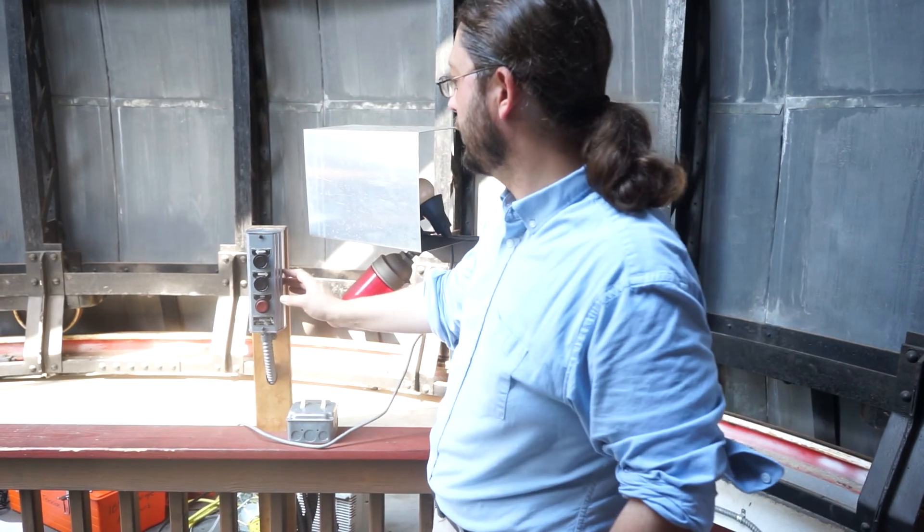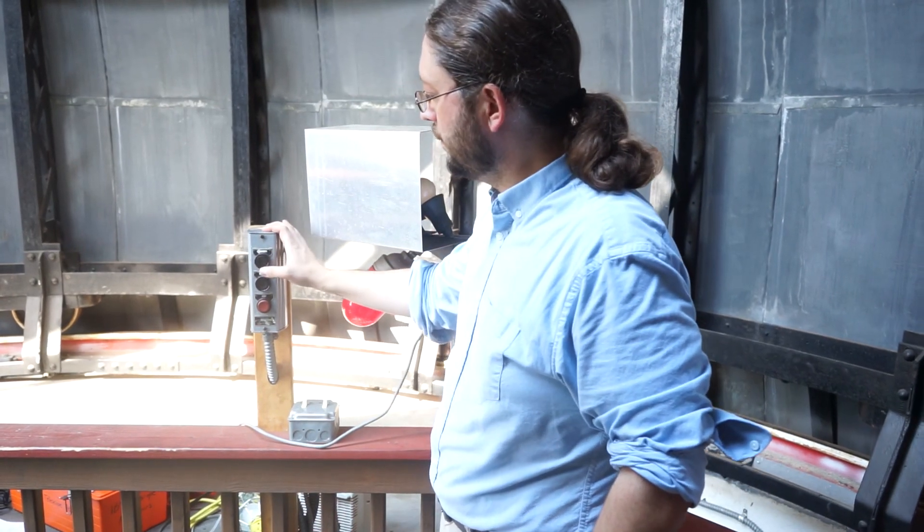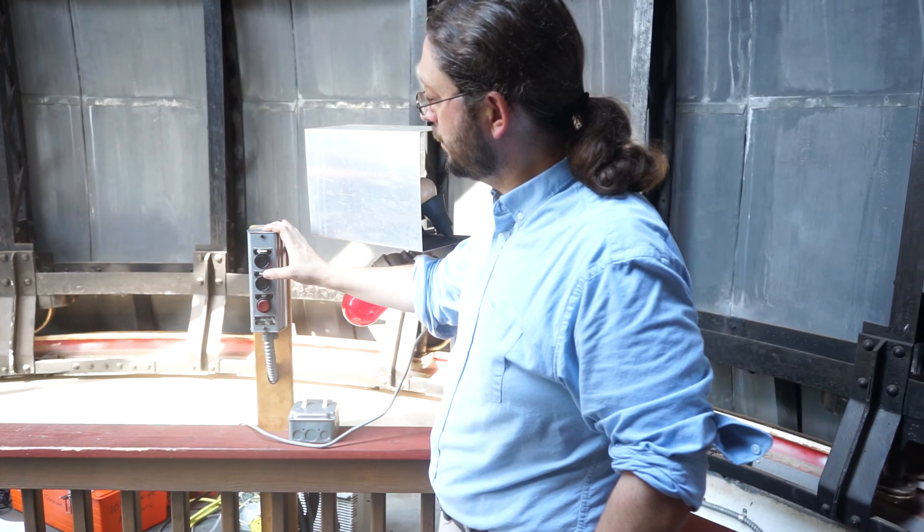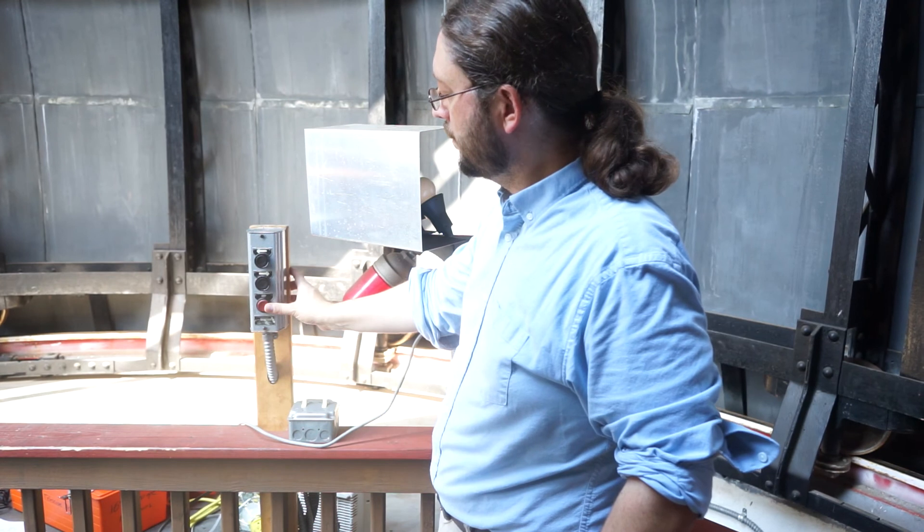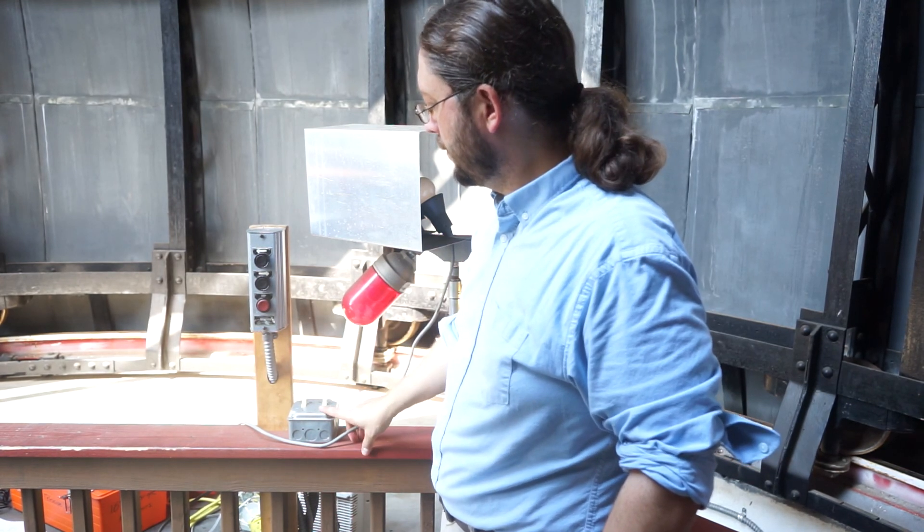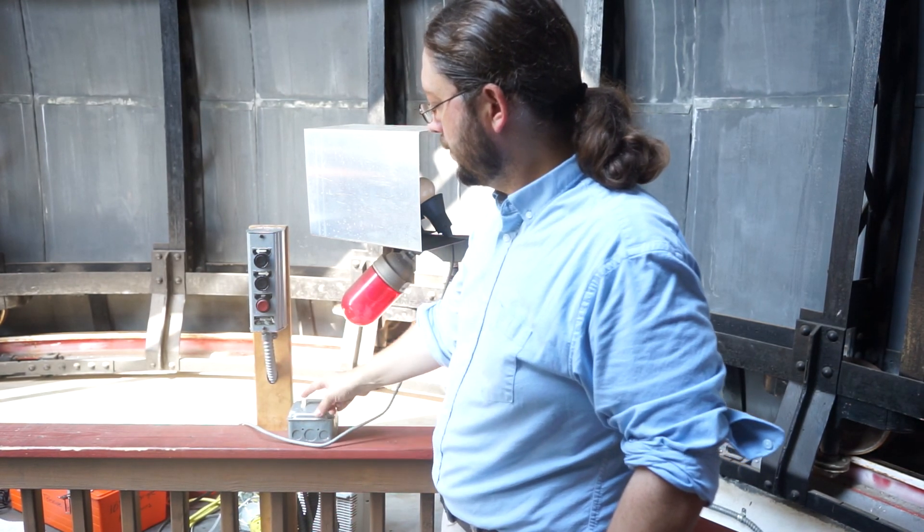To move the dome, you can use the push buttons on the column by the roof of the warm room. The light switches for the red and white lights are also found there.